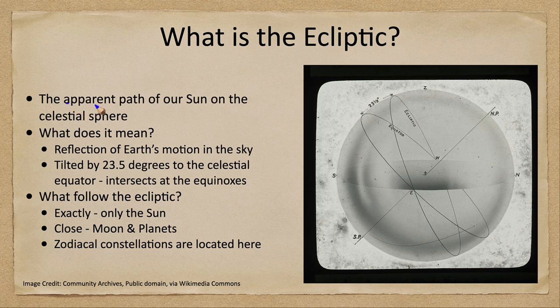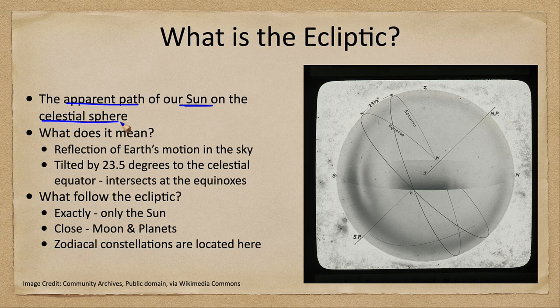So what is the ecliptic? Well, the ecliptic is actually the apparent path of our Sun on the celestial sphere. So it is the path that the Sun appears to take, and we can see that here. The one circle down here labeled the equator is the celestial equator, which we've talked about in a previous video. The ecliptic will be inclined toward this by some specific amount.